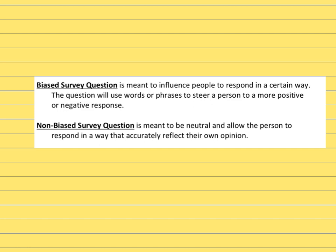Now the question being asked to the person taking the survey can also be either biased or non-biased. If something is biased, it is trying to influence people. It can influence them to be more positive or more negative — depending on what you want them to say, you can use certain words in your question to make them feel more positive or more negative about a situation. If you have a non-biased question, everything is neutral and you allow the person to reflect their own opinion without using positive or negative words.